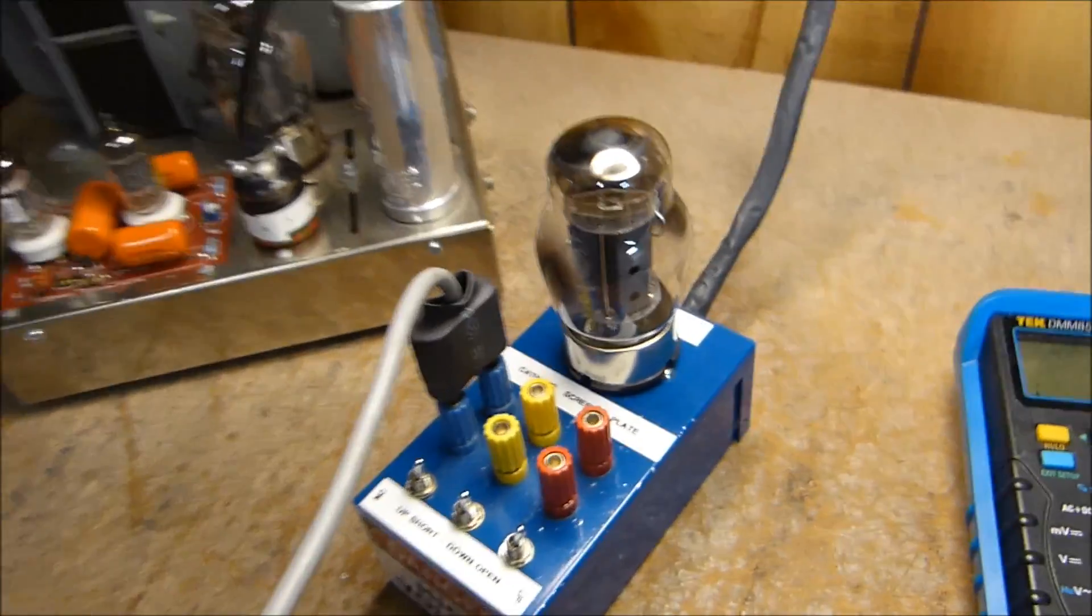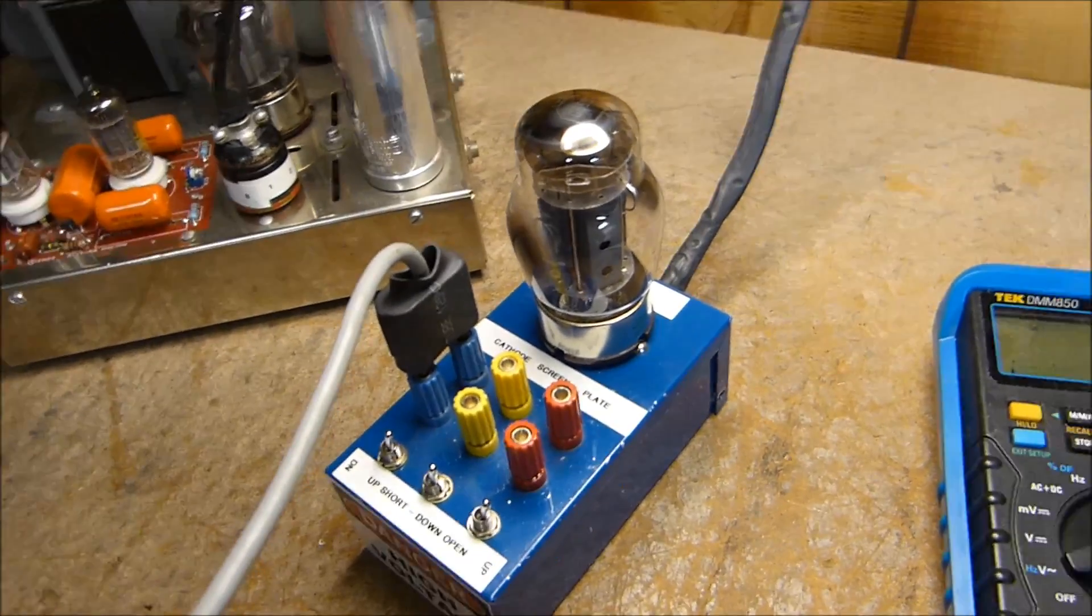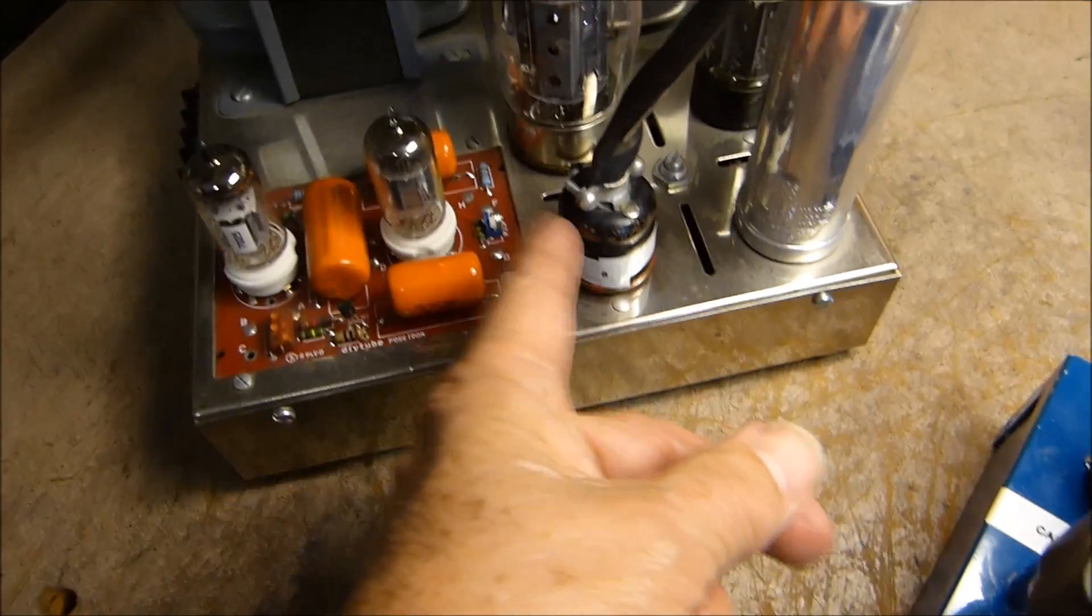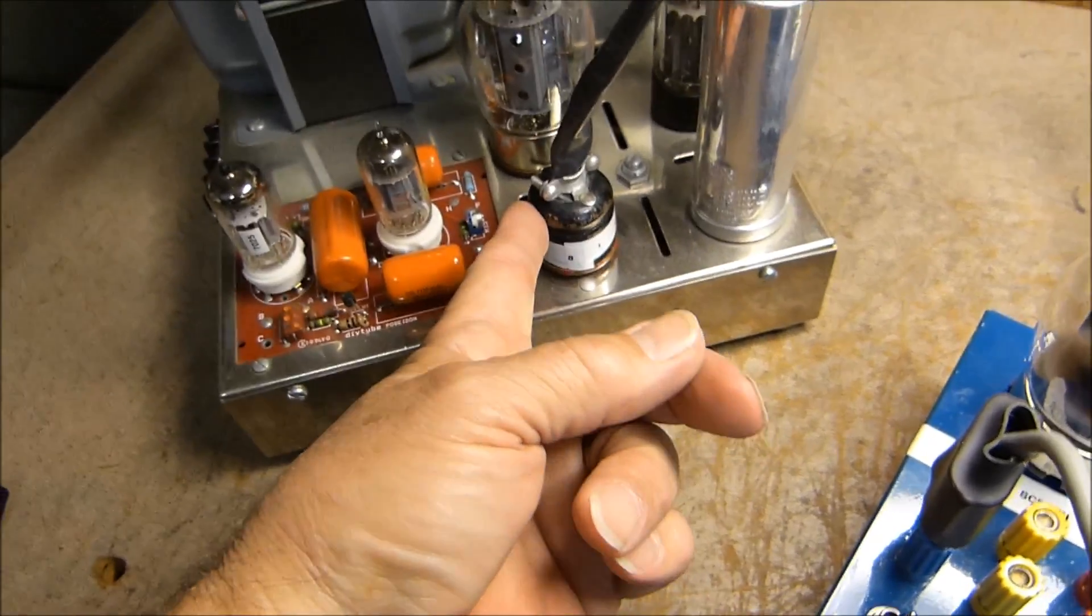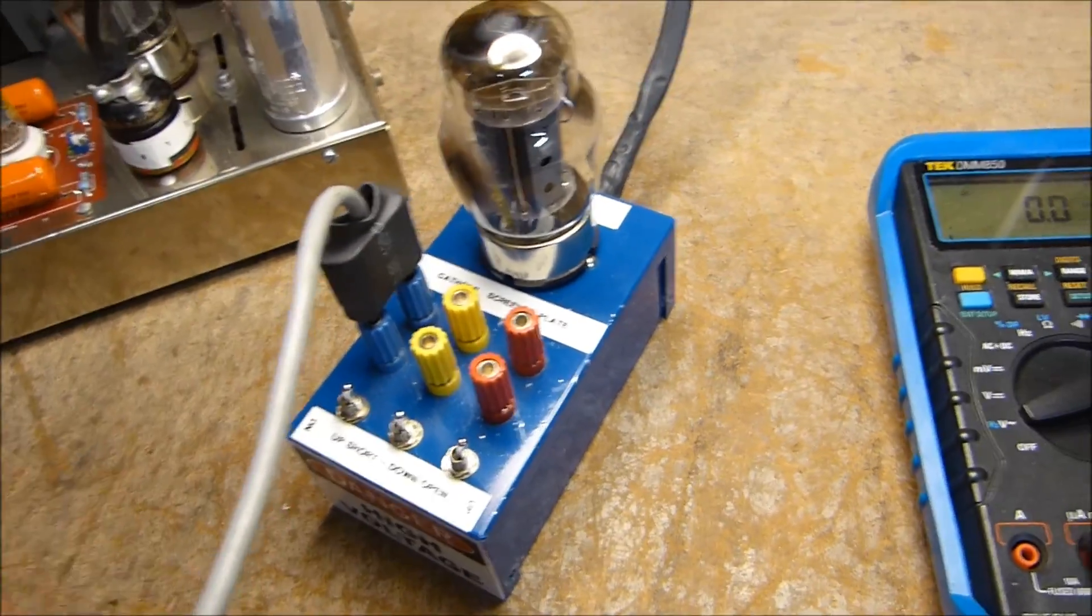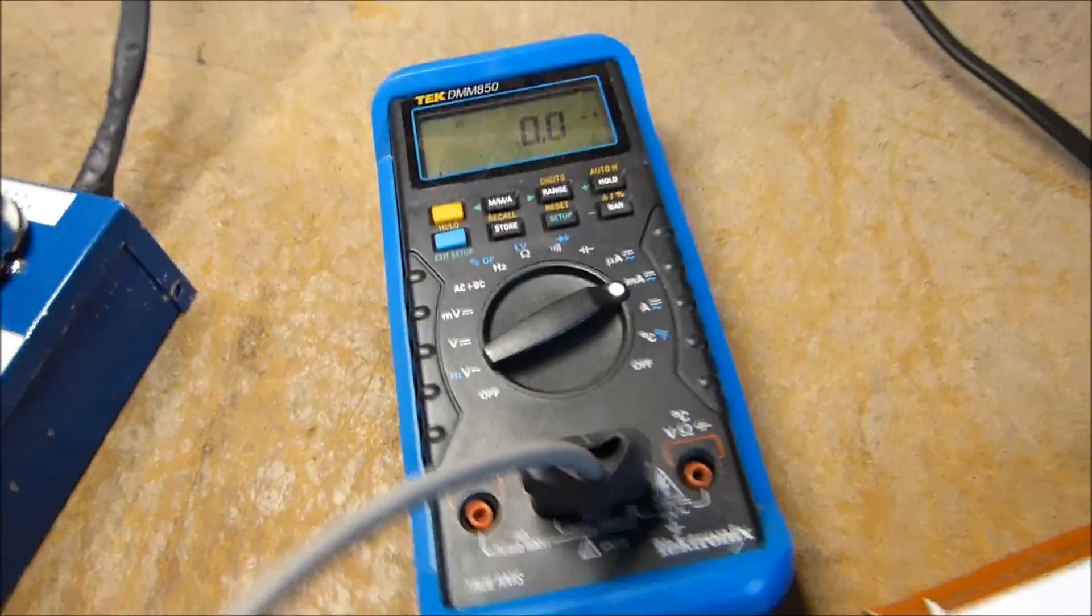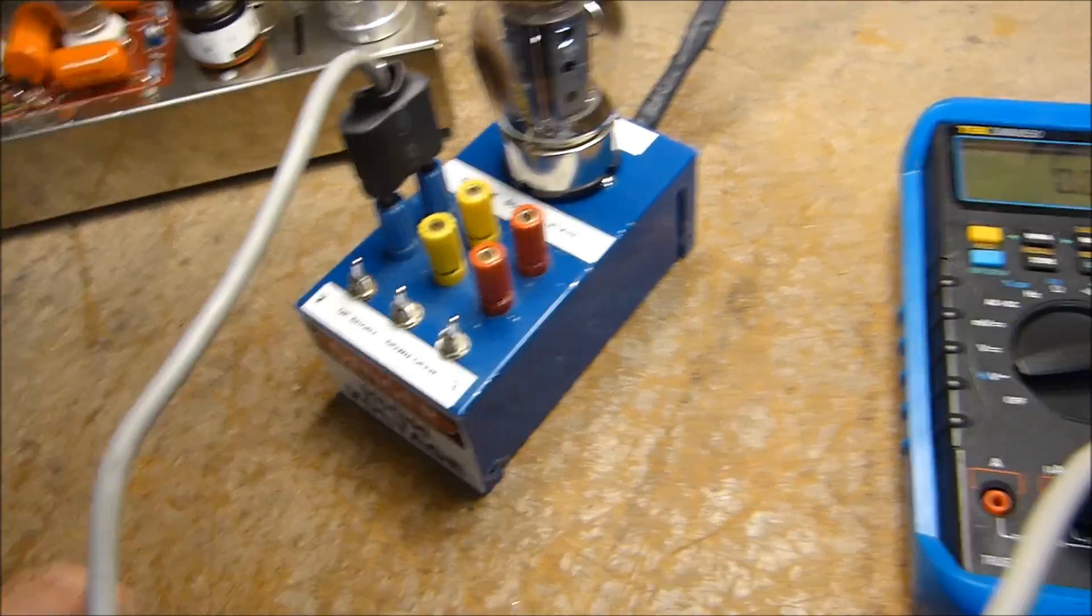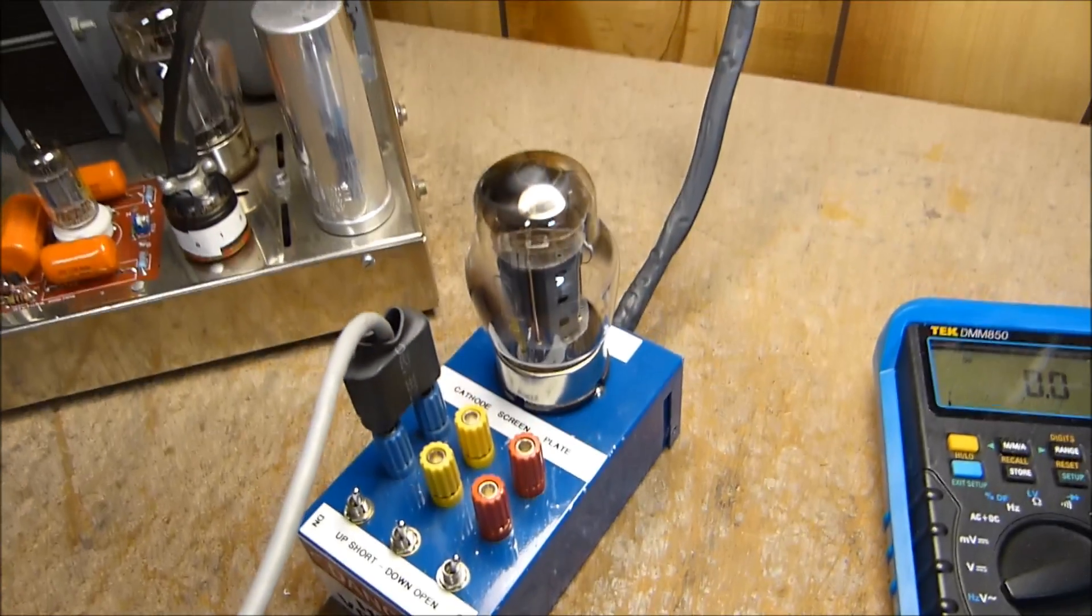That's my little bias probe. It's a little labor intensive because it only does one at a time. I suppose you could build a fancy one. If you ended up with a bunch of these, you could build one with a quad in it or whatever, four sockets, a bunch of switches. Maybe not even use a meter like this, maybe just get yourself a milliamp meter, build it all into one box.